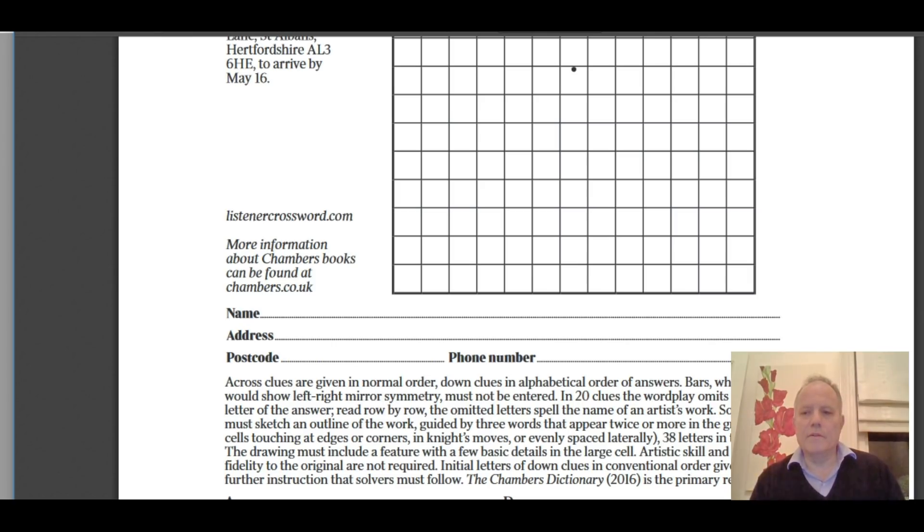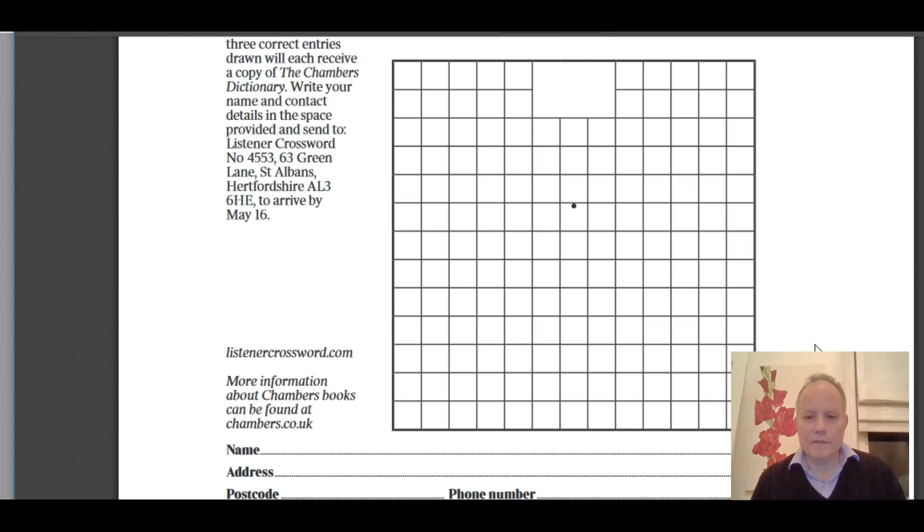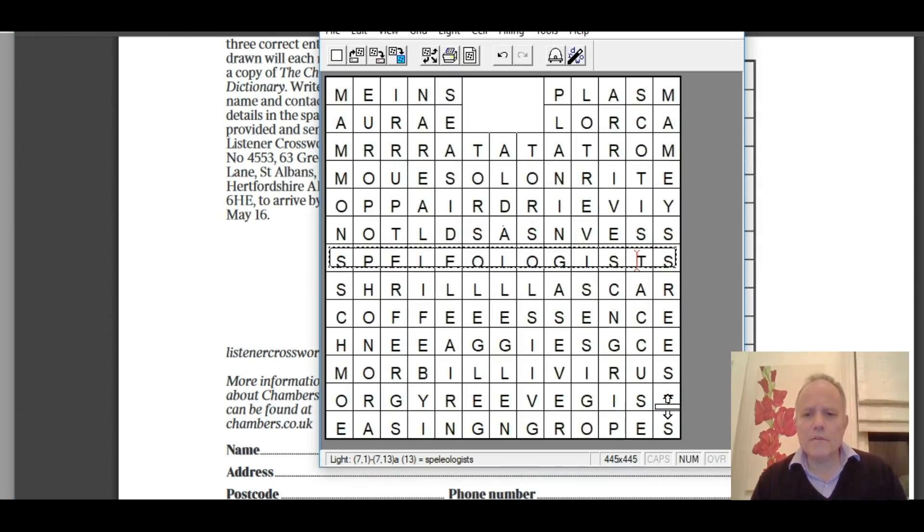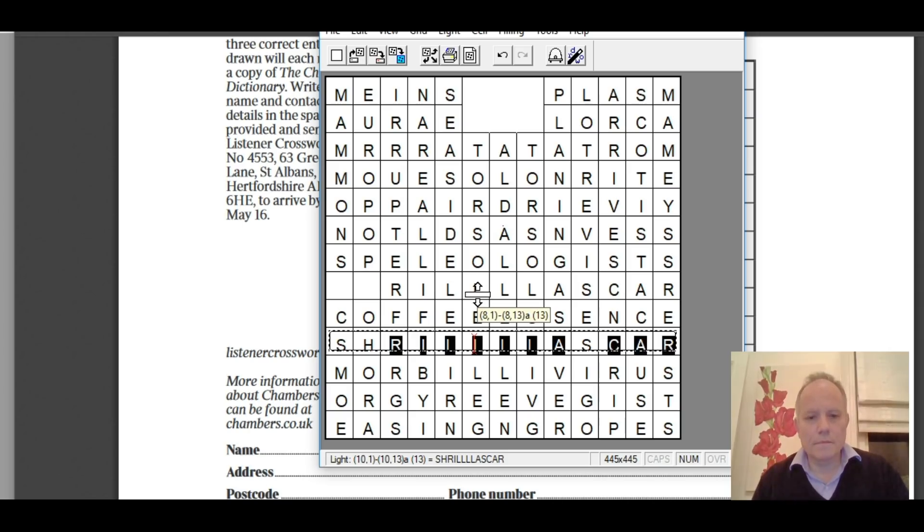And initial letters of down clues in normal order give further instruction that solvers must follow. Well, again, I'm not going to spoil it for you by trying to go through the clues of this, but I will show you how the solution worked. When you solve the puzzle, this was the grid you got, with a message, importantly, from the down clues as it revealed that said something like center the circle at the navel and the dot. I've tried to show it in this square with an A, and it was there. But I mean, very clearly, this was going to be the Vitruvian Man again, just as I'd suspected from the start. And when you draw the same sort of circle here...